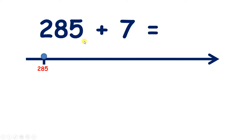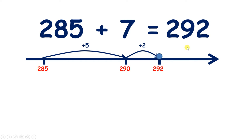But again, we can use bridging to get to the answer more quickly. So if we're on 285, 5 more will take us to 290, and then we can add another 2, 292. So we've added 7 altogether. And that gives us our answer of 292.